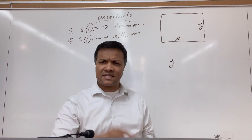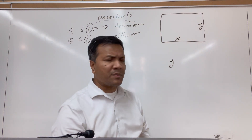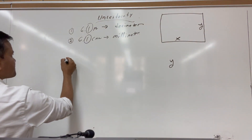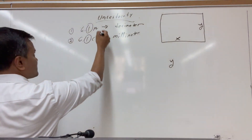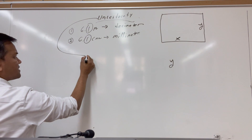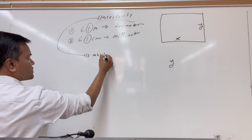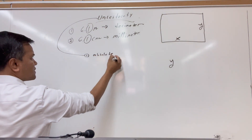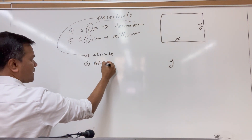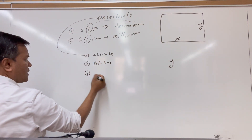Uncertainty is the doubt in the measurement. We're going to divide it into three parts. There are three types of uncertainty: number one, absolute; number two, relative; and number three, percent.